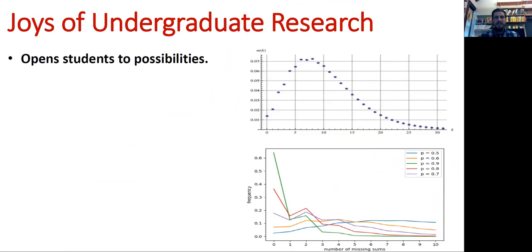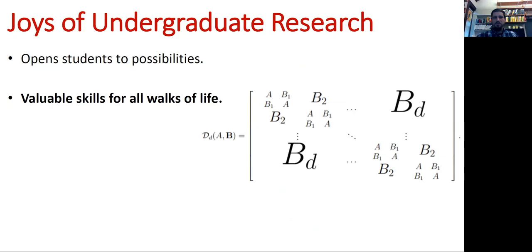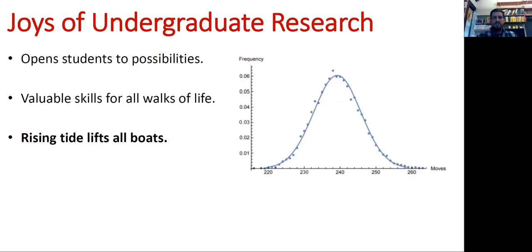I want to talk just briefly about some of the joys of undergraduate research. The first is that it opens up students to possibilities. It's very different than taking a standard class where you know exactly what to do. If section 3.4 is on the chain rule, it's a pretty good guess that the chain rule will play a key role in doing the homework problems. Here, it's a lot more creative, a lot more freedom in terms of what to do, a lot more funding. The next is you build up valuable skills for all walks of life. Even if you don't become an academic, you are still going to be giving talks, unless of course you become a professional mime, you'll be writing papers, you'll be reading technical things, and the skills you build here are highly transferable.